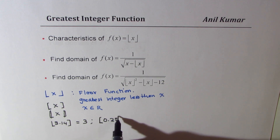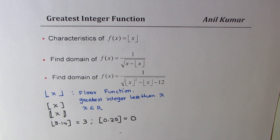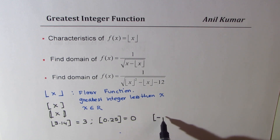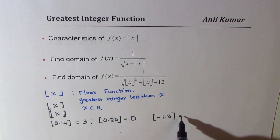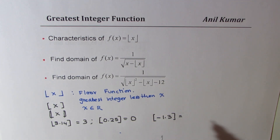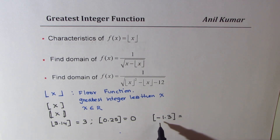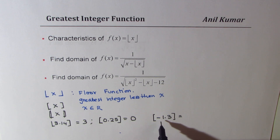If I have 0.25, for example, that is equal to just 0. Now if I have a negative value — for example, negative 1.3 — what is this equal to? In this case the greatest integer here is actually looked at from the left side, so we need to work that out.